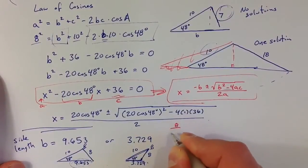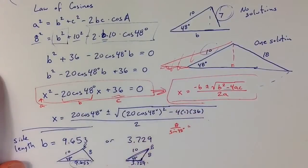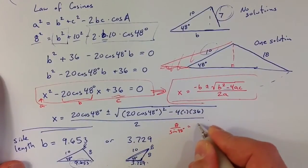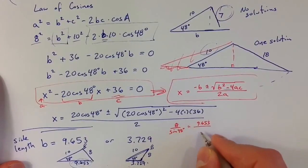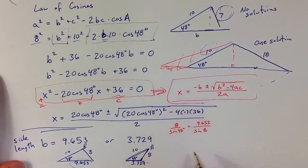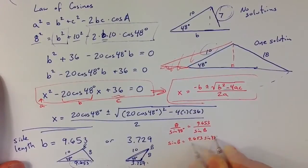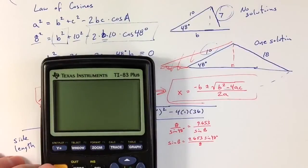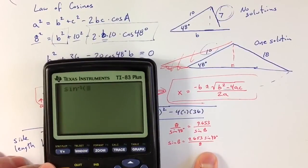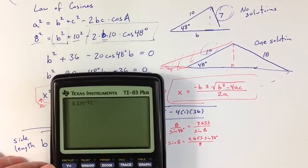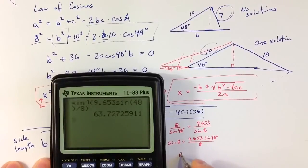So let's try to figure this out. I know that the side length 8 divided by sin(48°) has to be the same ratio as the side length 9.653 divided by sin(angle B). And so moving things around here, we end up with sin(angle B) = 9.653·sin(48°) / 8. So I know that sin⁻¹ of all of that stuff is going to give me the value that I need. So sin⁻¹(9.653·sin(48°) / 8) equals the angle that I'm looking for. So angle B in that first solution is 63.7 degrees.